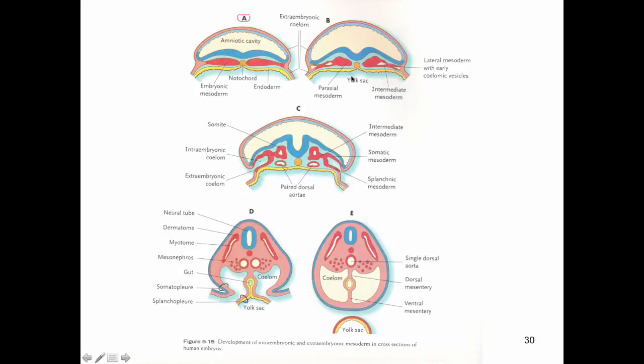As we go from A to B, we notice that neurulation is occurring with the neural groove and the neural fold. But what's also happening, if you notice, these ends of the embryo here are starting to move down. Then if we go to D, they're actually starting to pull together and they're pinching off a portion of endoderm.